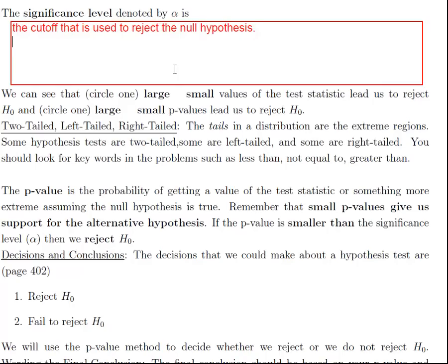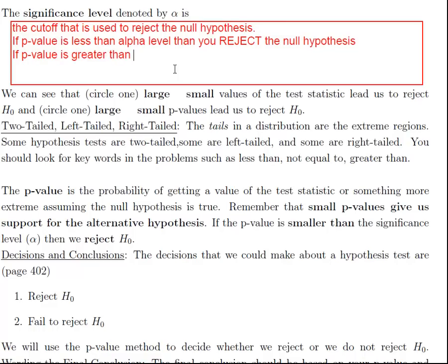The next thing that I'm going to type is really important. So if you don't write anything else down for this whole lesson, make sure you write this down. If your p-value is less than the alpha level, then you reject the null hypothesis. If your p-value is greater than the alpha level, then you fail to reject or you don't reject.